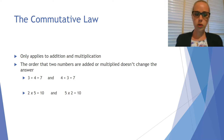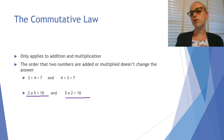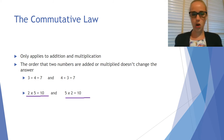The commutative law also applies to multiplication. So if you've got two groups of 5, you've got 10, and if you've got five groups of 2, you've got 10. So it doesn't matter what order you do your multiplying in either.